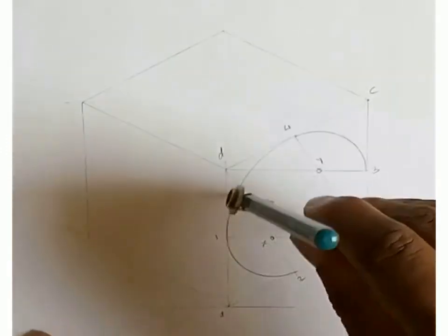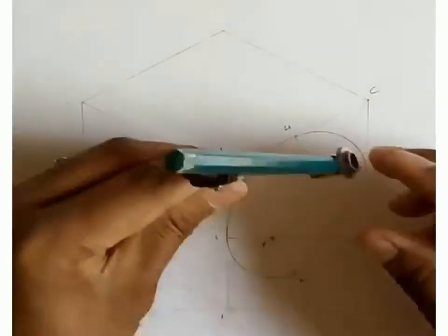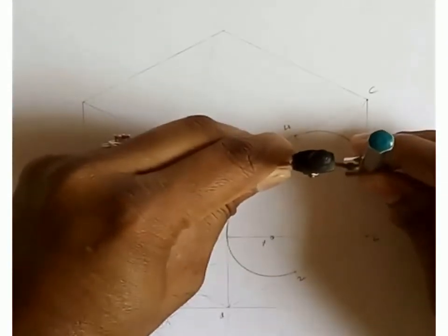Then B as center and B1 or B4 as radius draw an arc 1 to 4. And with center D and radius D3 or D2, draw an arc 2 to 3.